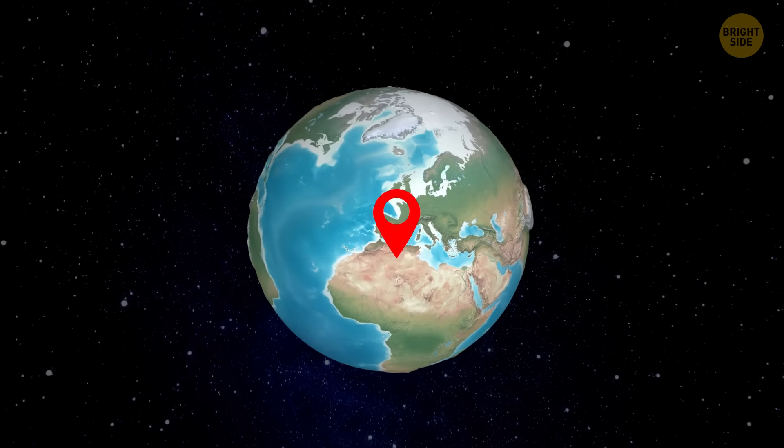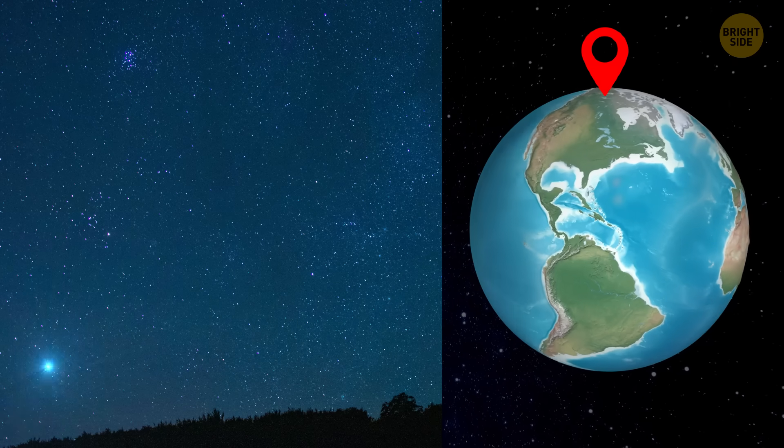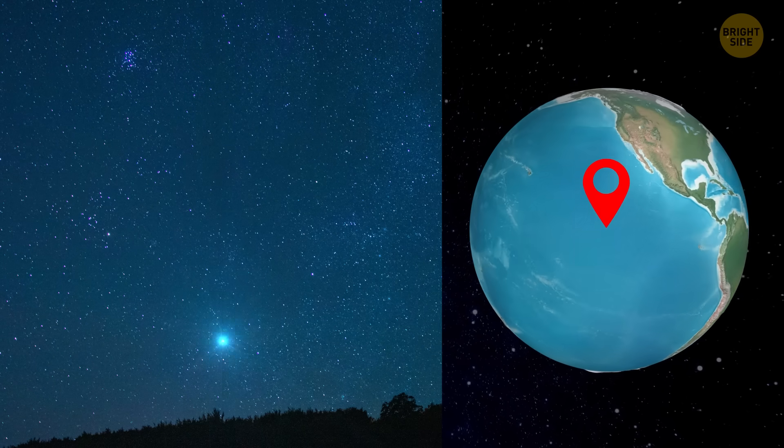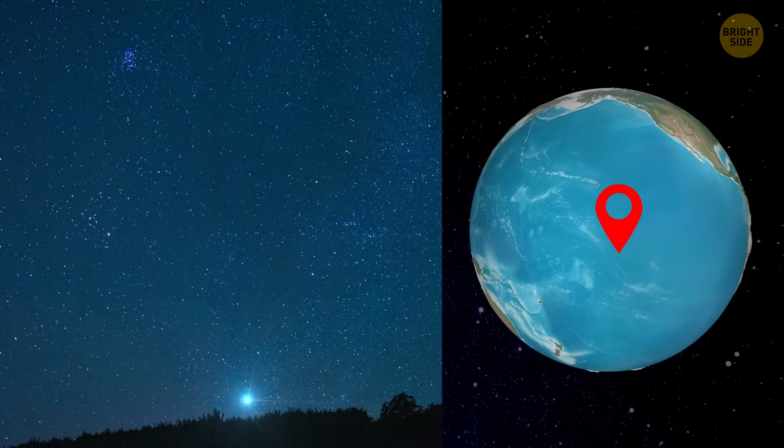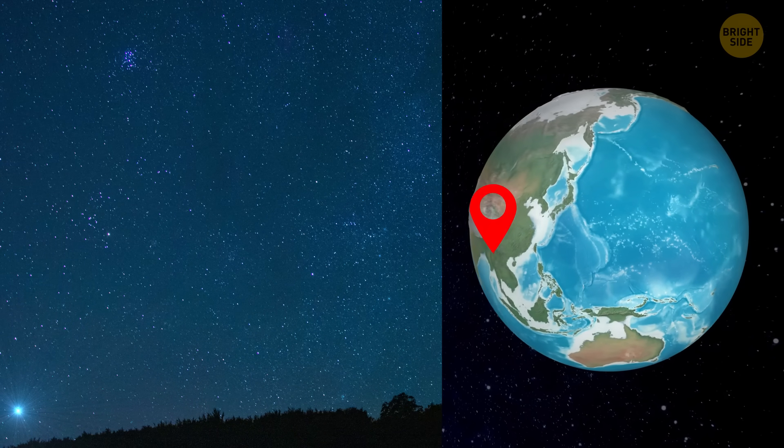If you were standing on the equator, Polaris would be right at the horizon. At the north pole, it would seem to be right over your head. In other words, using the star's height in the sky, you can not only figure out the needed direction, but also understand where you are on Earth.